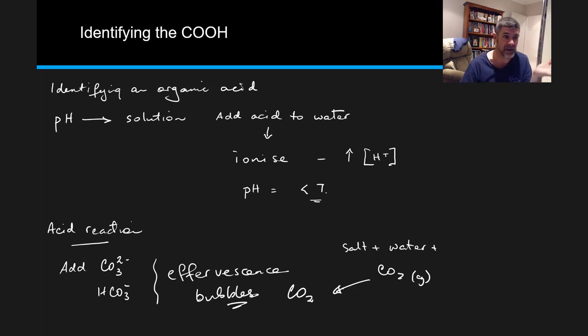If we didn't get effervescence, then we've got a carbon-carbon double bond or a hydroxyl group. We'll add bromine water next to eliminate the carbon-carbon double bond, which will leave us with the hydroxyl group.